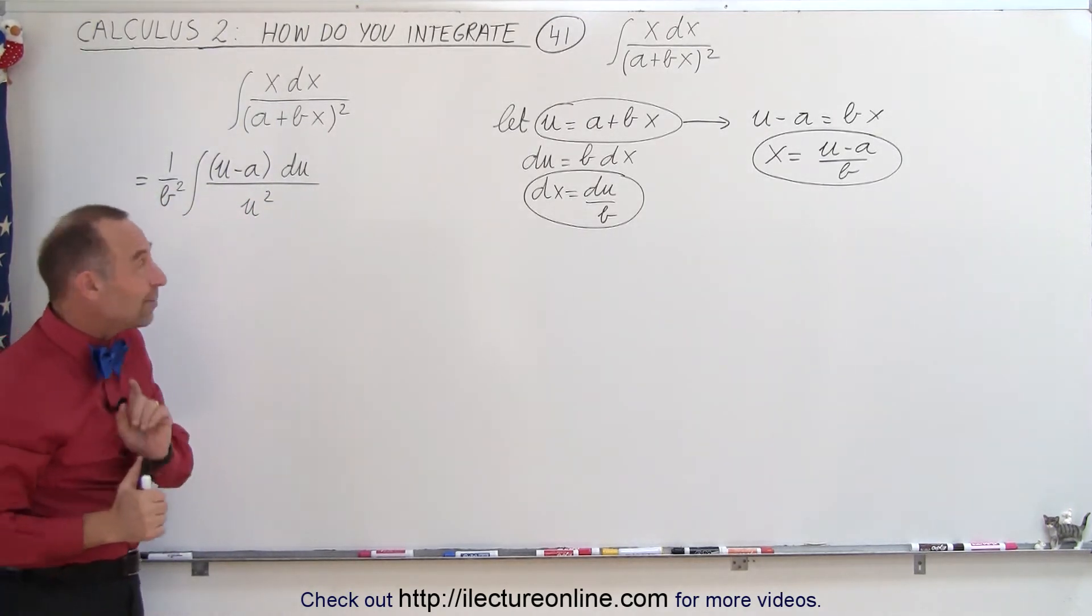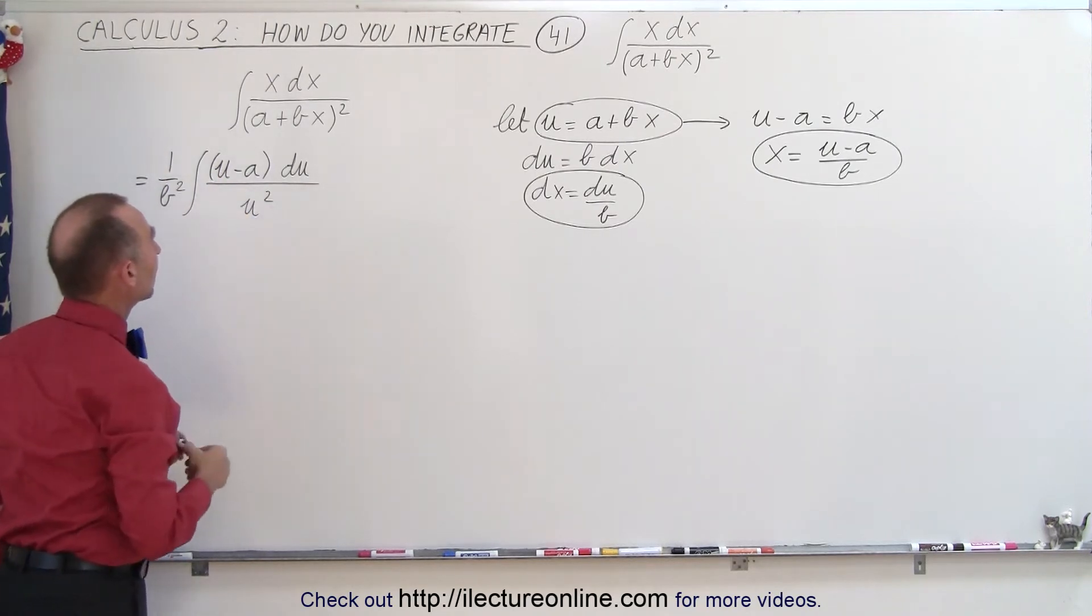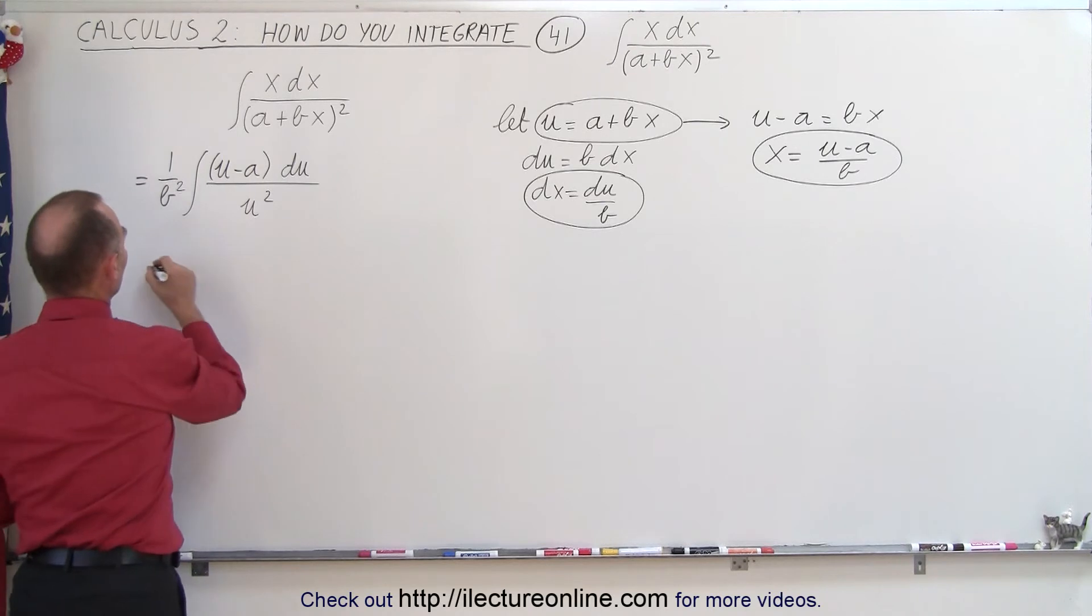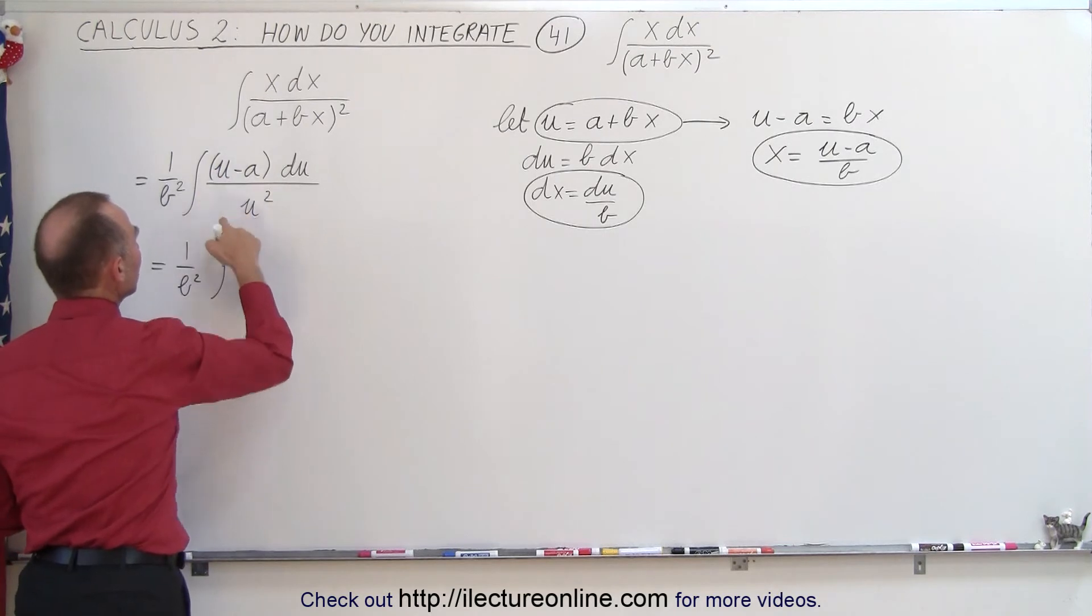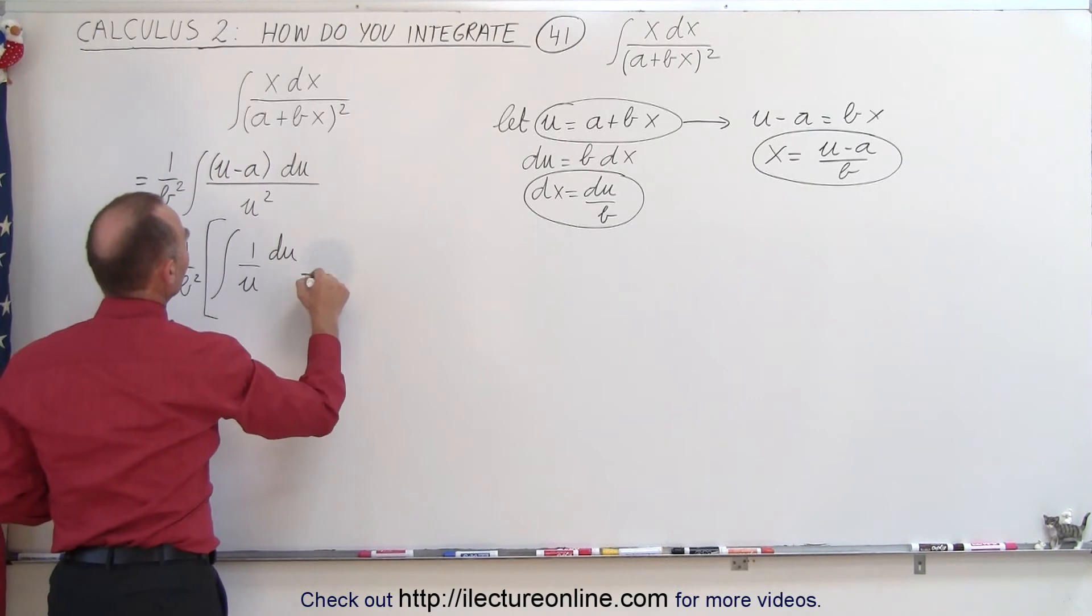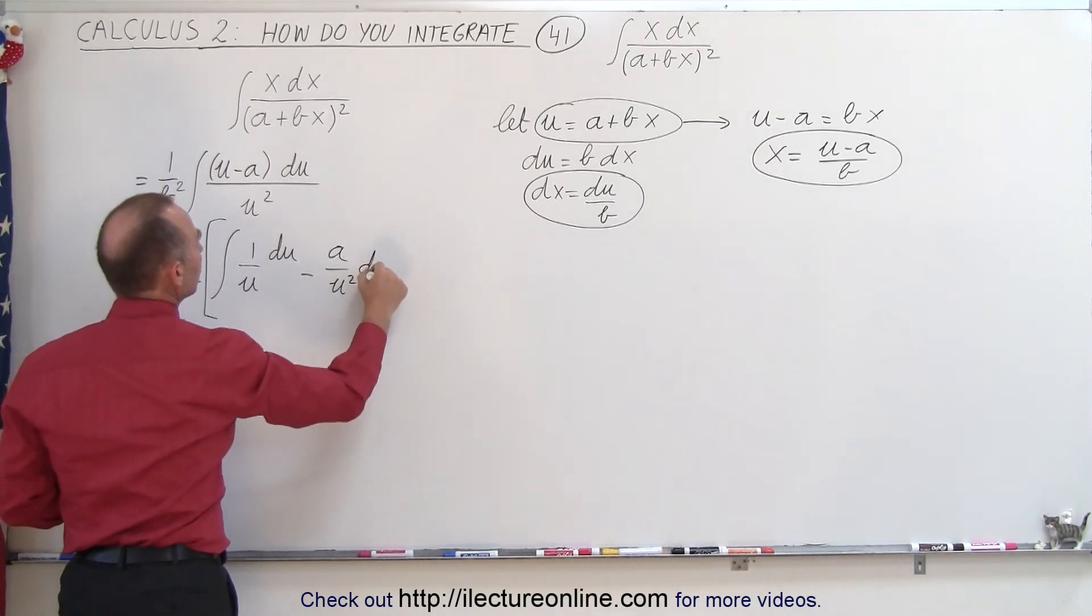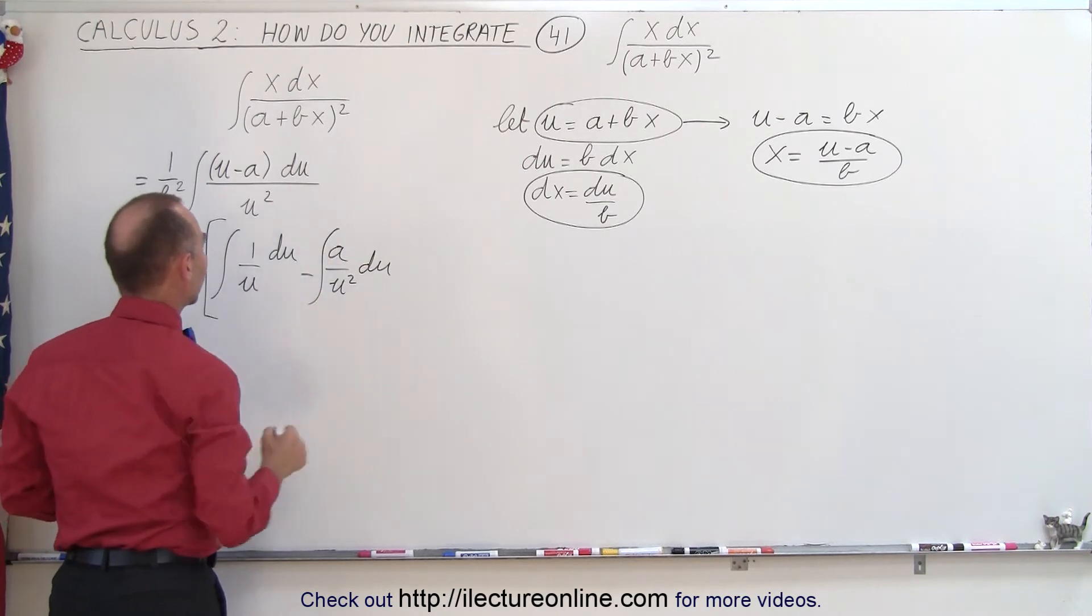Now we're going to do the same thing as we did before. We're going to divide the denominator into the numerator and see what we get. So this becomes equal to 1 over b squared times the integral of u divided by u squared which is 1 over u du. I can simply write du over u and minus a over u squared du. We'll write this as two separate integrals.